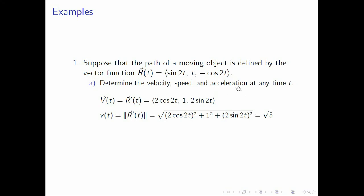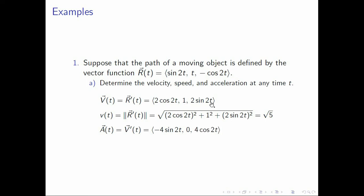Next, let's find the acceleration. Recall that the acceleration is just v prime of t, so we differentiate v of t component-wise. For the first component, we differentiate 2 cosine 2t, which gives negative 4 sine 2t. For the second component, we differentiate 1, and get 0. For the third component, we differentiate 2 sine 2t, and get 4 cosine 2t. And this is our acceleration function.